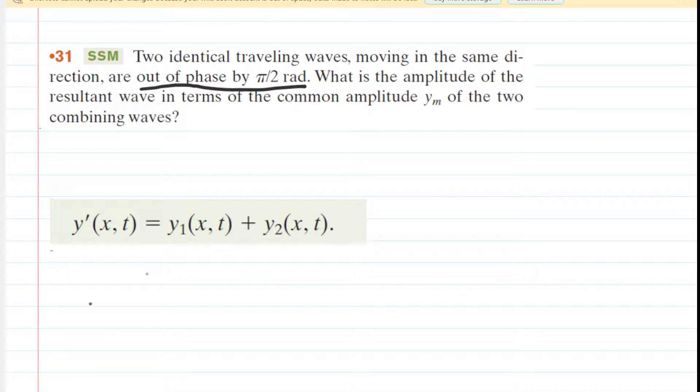For wave 1, we can write the following equation. This is just the basic equation of a wave traveling along. And for wave 2, since it is said to be out of phase by π/2 radians, we're going to write the exact same equation.